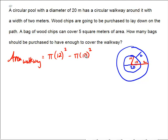So the two radii, the outer and the inner radius, should be 12 and 10. And then we're going to divide by the size of our bag here to find out how many times we have to use the bag. And the bag for us in this problem is covering 5 square meters, so we're going to divide by 5.